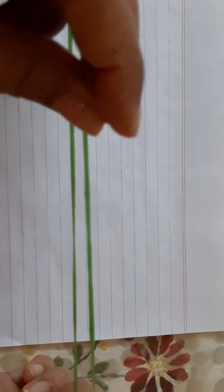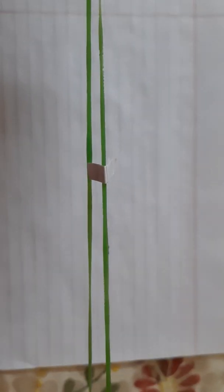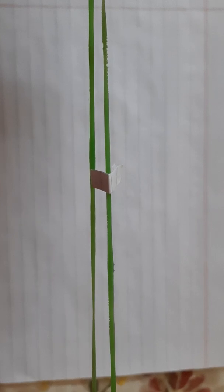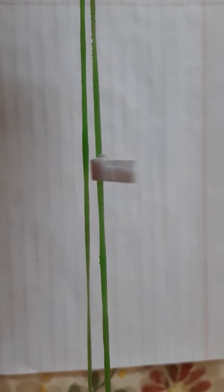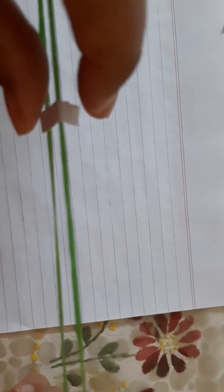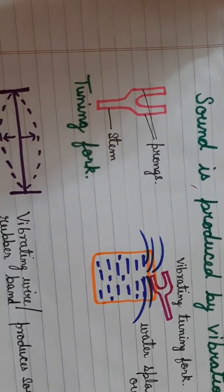Now if it is not clear, what will I do? I will take a paper rider. I am mounting this paper rider onto this rubber band. Now I slightly pluck it. You can see that on plucking, the string is set into vibration. Here is the paper rider — I am plucking it, and the paper rider flies off. This activity proves to you that sound is produced as a result of vibrations in an object.